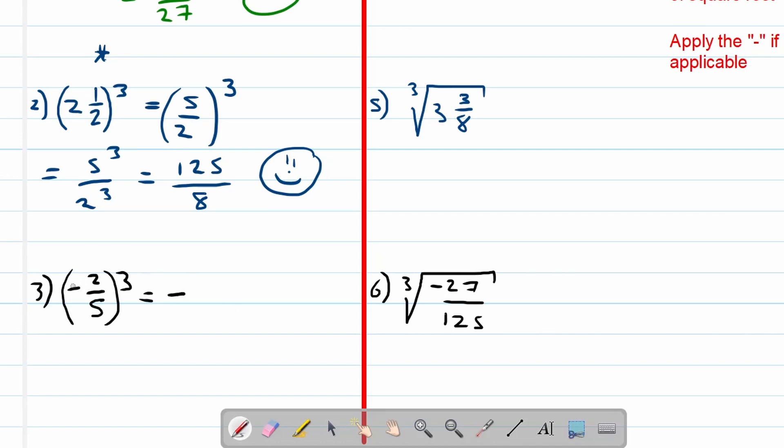I'm going to repeat that: a negative times a negative is a positive, and then that positive times another negative is equal to a negative. So we can write this on the outside. Now we're going to say 2 to the power of 3 over 5 to the power of 3, and then this will become negative 8 over 125. And that's how we work with cubes.